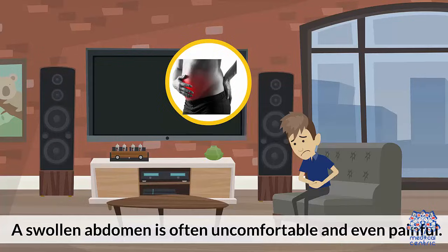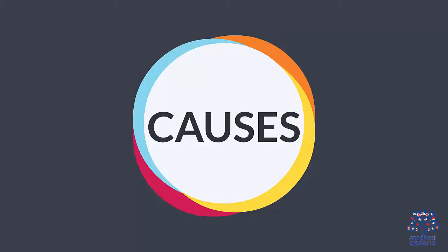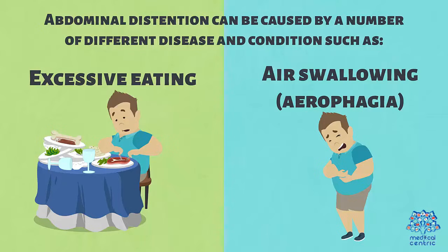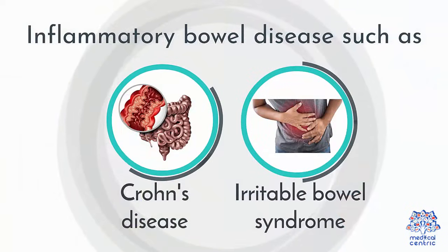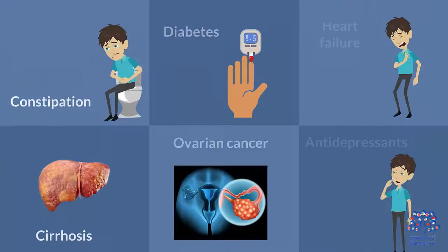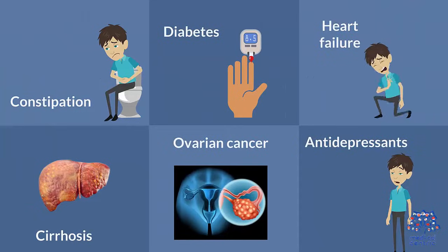A swollen abdomen is often uncomfortable and even painful. Abdominal distention can be caused by a number of different diseases and conditions such as excessive eating, air swallowing, aerophagia, inflammatory bowel disease such as Crohn's disease, irritable bowel syndrome, constipation, diabetes, heart failure, cirrhosis, ovarian cancer, and certain medications.